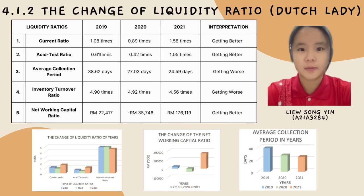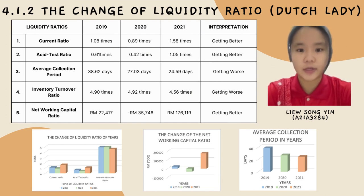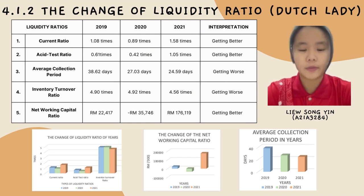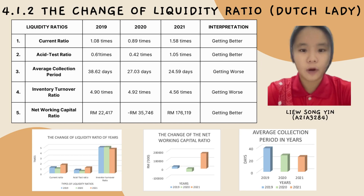Hi, my name is Liu Songying, my metric number is A2183284. Today I'm going to present about the change of liquidity ratio in Dutch Lady. In liquidity ratio, current ratio, acid test ratio, and net working capital ratio increased from 2019 to 2021. Besides, average collection period and inventory turnover ratio decreased from 2019 to 2021.